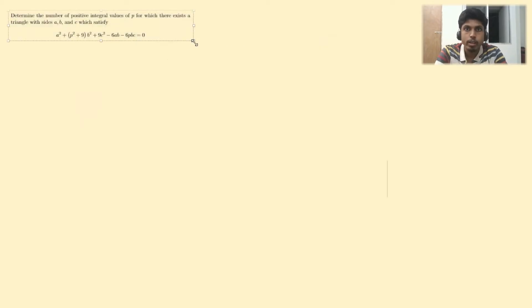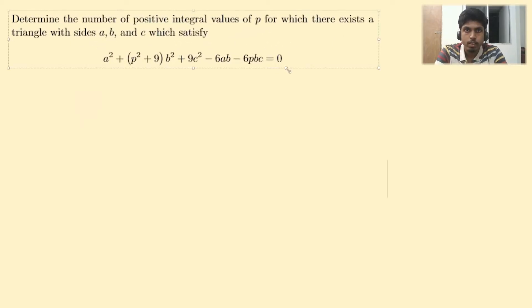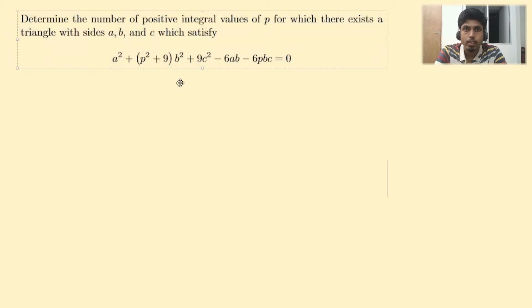It talks about determining the number of positive integral values of p for which there exists a triangle with sides a, b, and c satisfying the given condition. So first, let's note down the ideas. P is a natural number and a, b, c represent sides of a triangle.